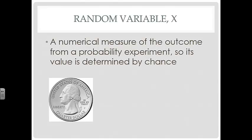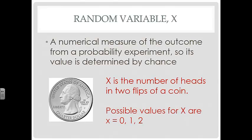Suppose we have a quarter and we're going to flip that quarter two times. X is the number of heads in two flips of the coin, so the possible values for X are 0 because you could land on tails both times, 1 because you could land on heads one time and tails the other, and 2 because you could get heads both times.